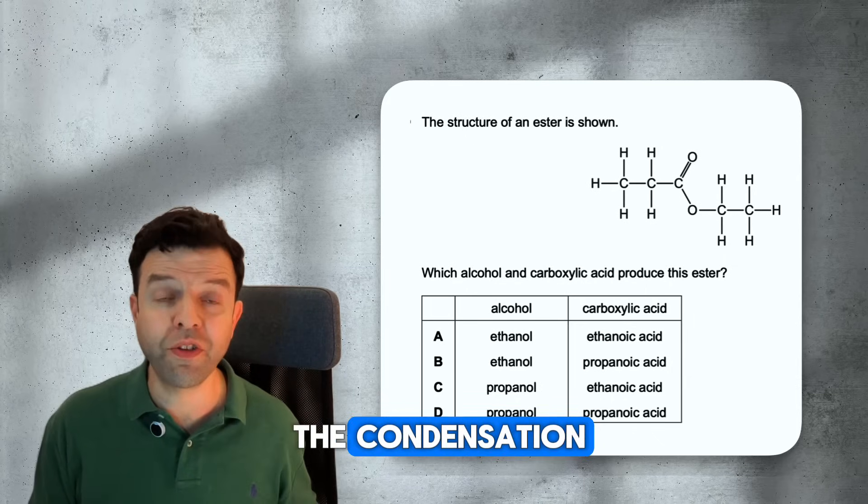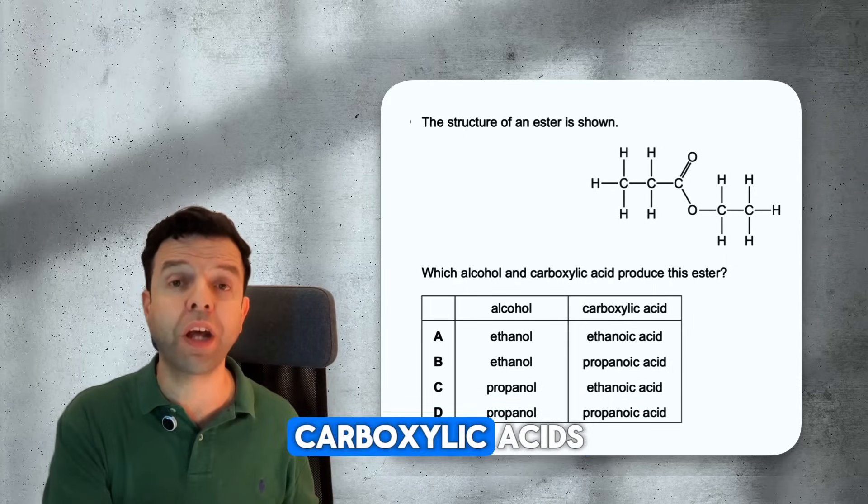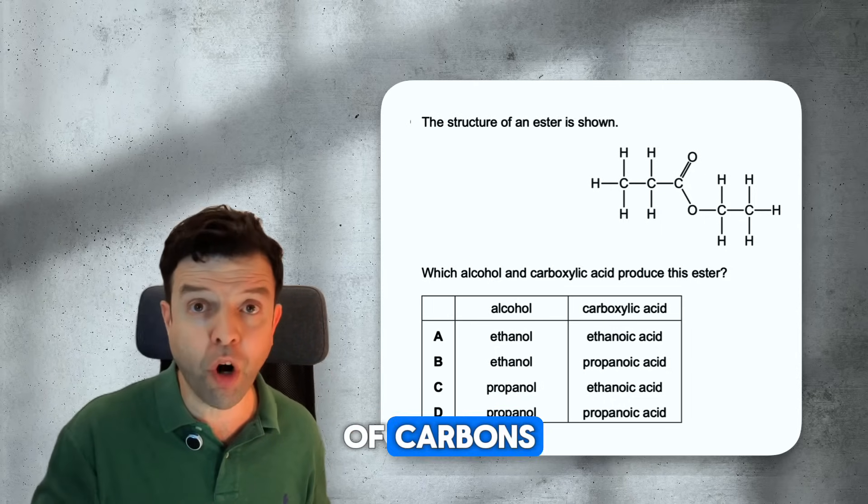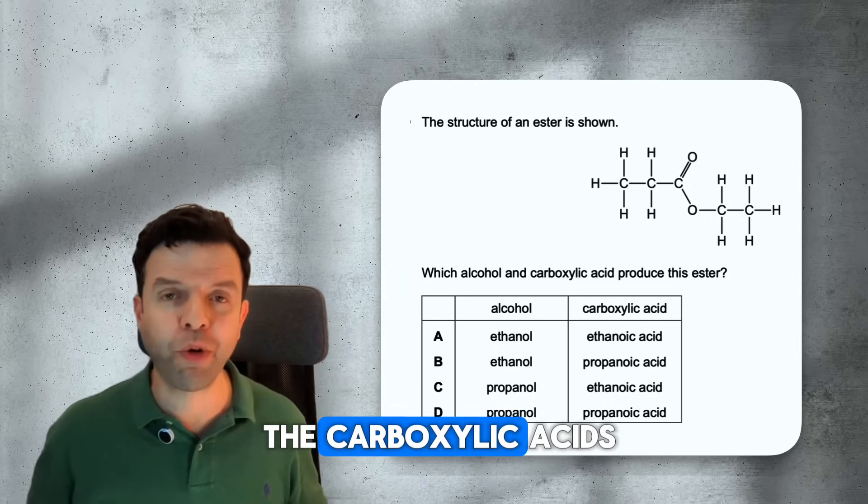Esters are made by the condensation reaction of alcohols and carboxylic acids. The number of carbs in an ester is the total number of carbs in the alcohol plus the carboxylic acids.